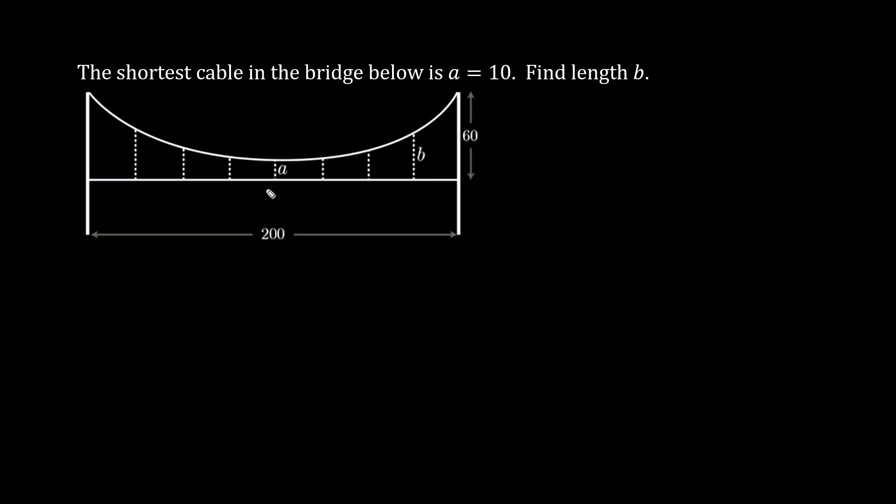The shortest cable in the bridge below is a equals 10. So from here to the origin here is a length of 10. Find the length b.